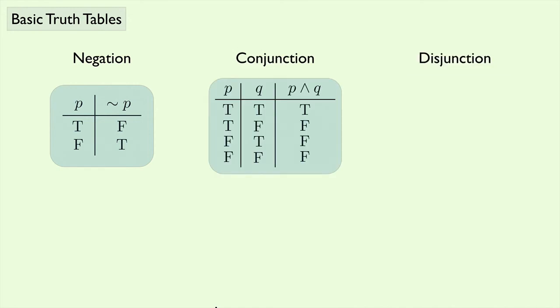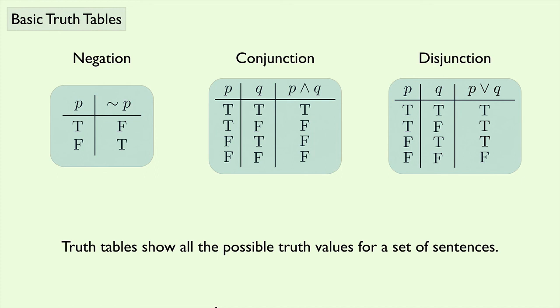And here, once again, are the truth tables for the conjunction and disjunction. We'll see later on that truth tables can be used to evaluate the truth values of more complicated expressions. In general, truth tables show all the possible truth values for a set of sentences.